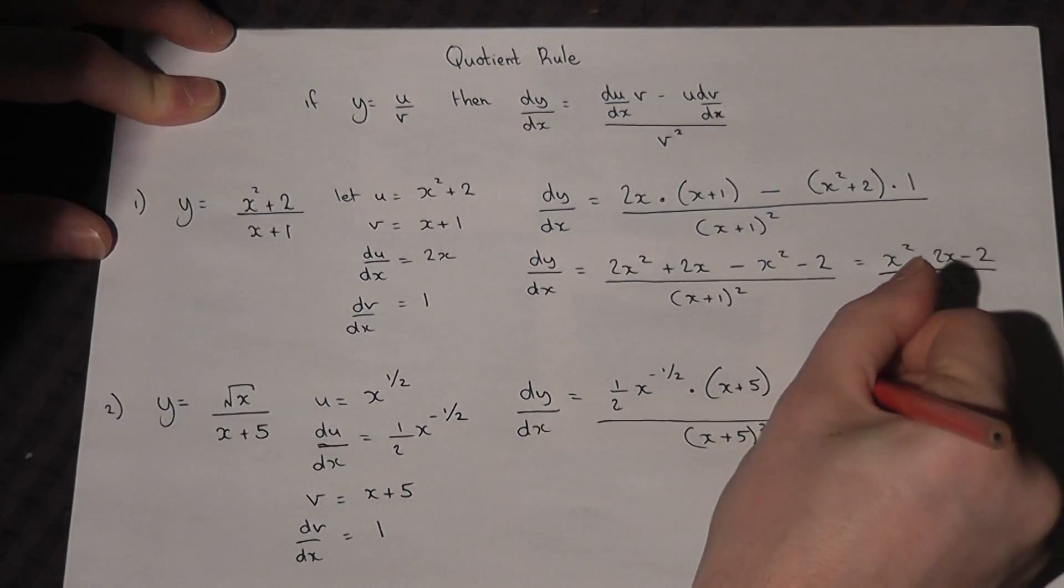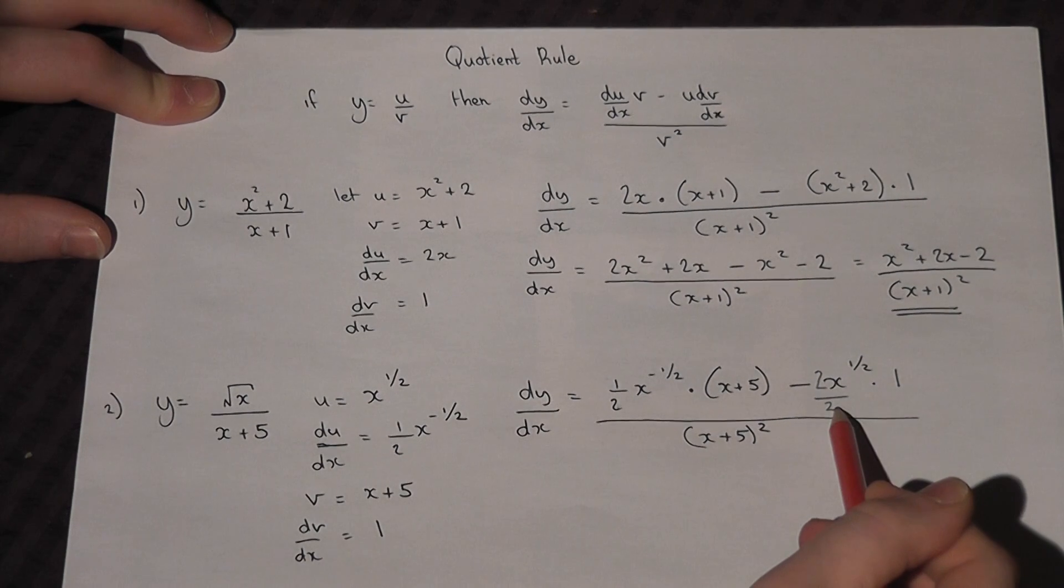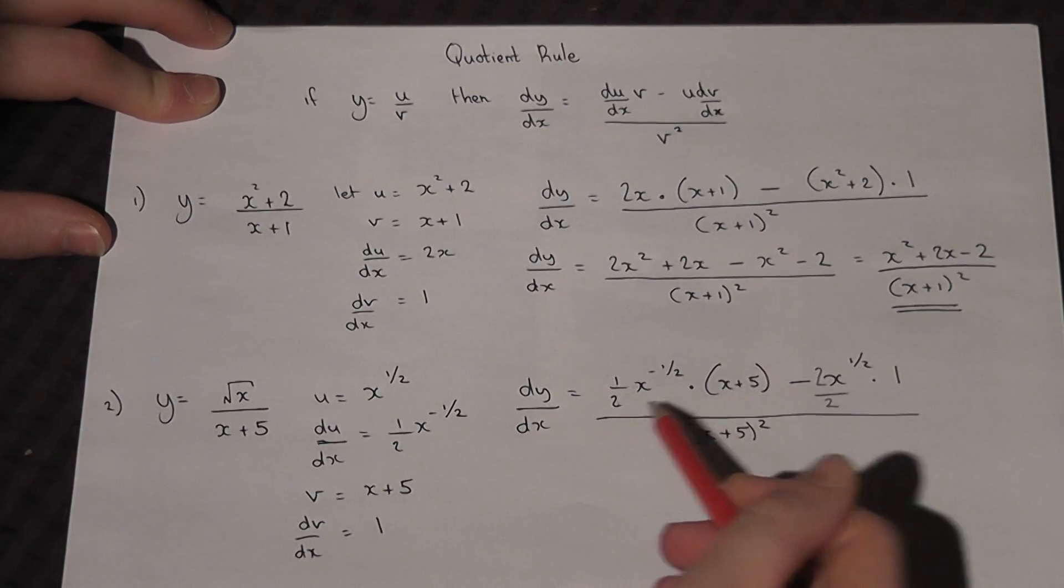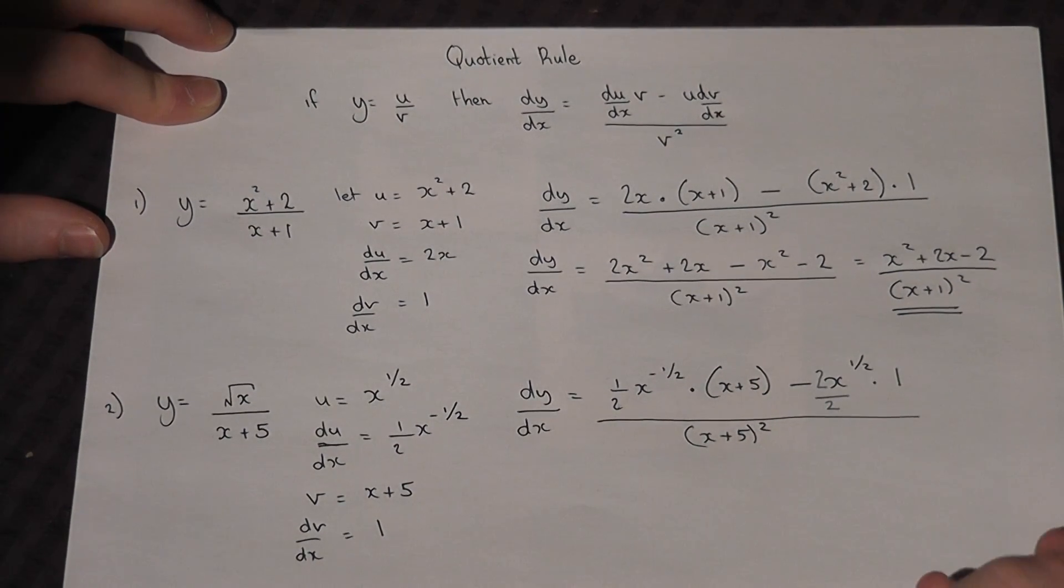But obviously, that changes it, so I put a 2 on top as well. So 2 over 2 cancels out, the way it worked before. But it puts the factor of a half in. Let's see why in a moment.